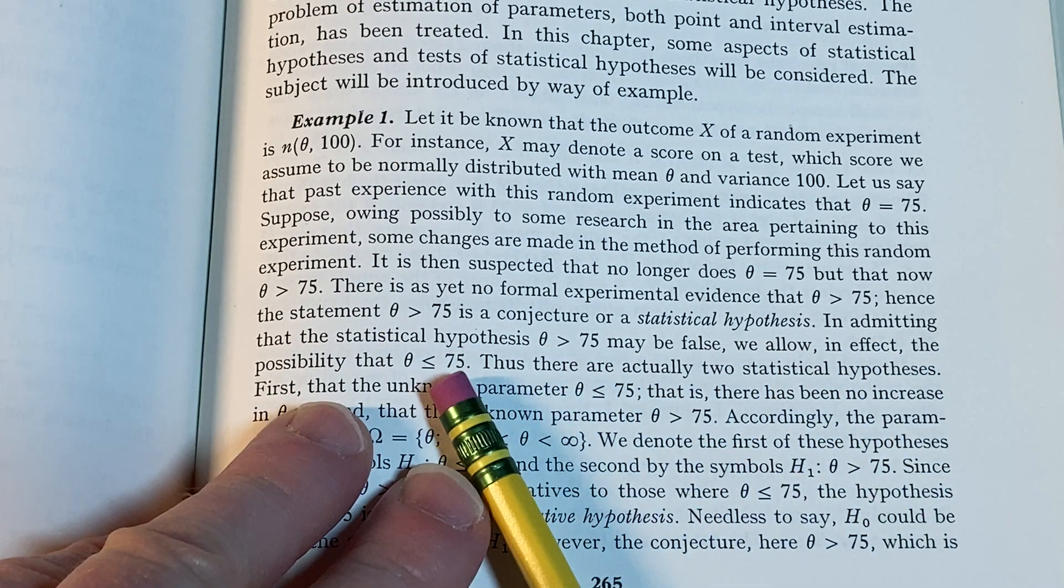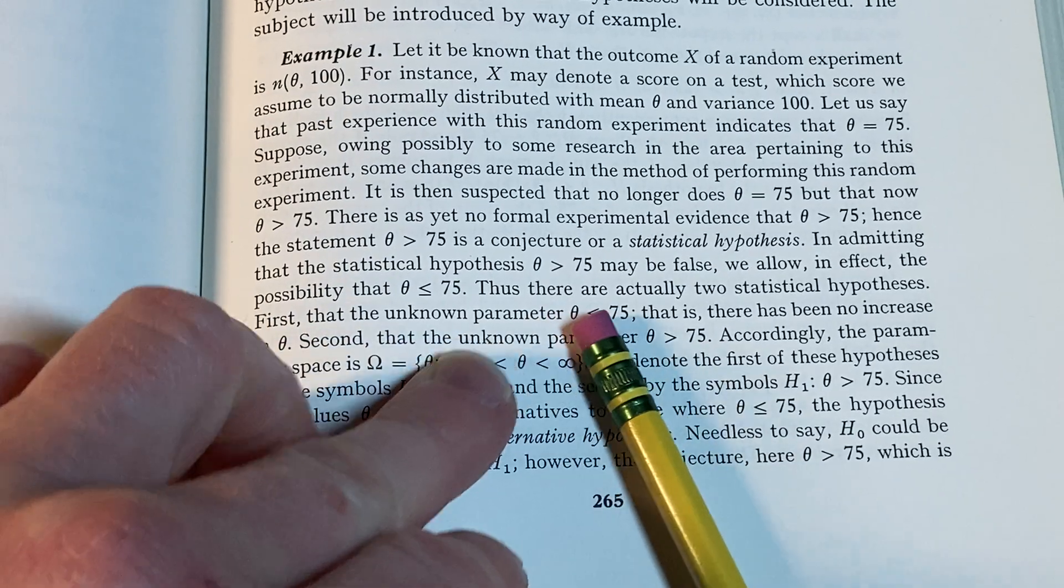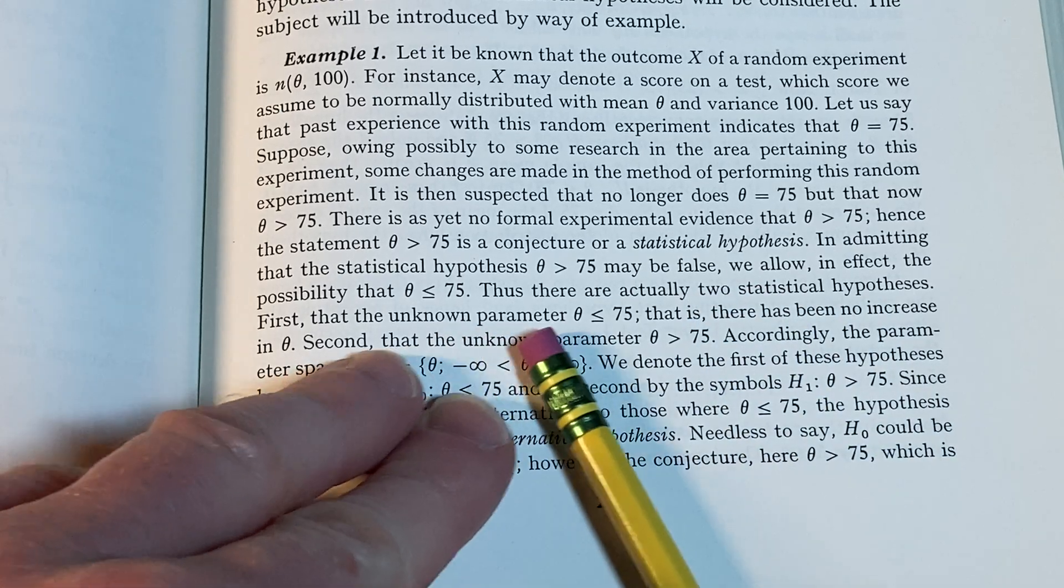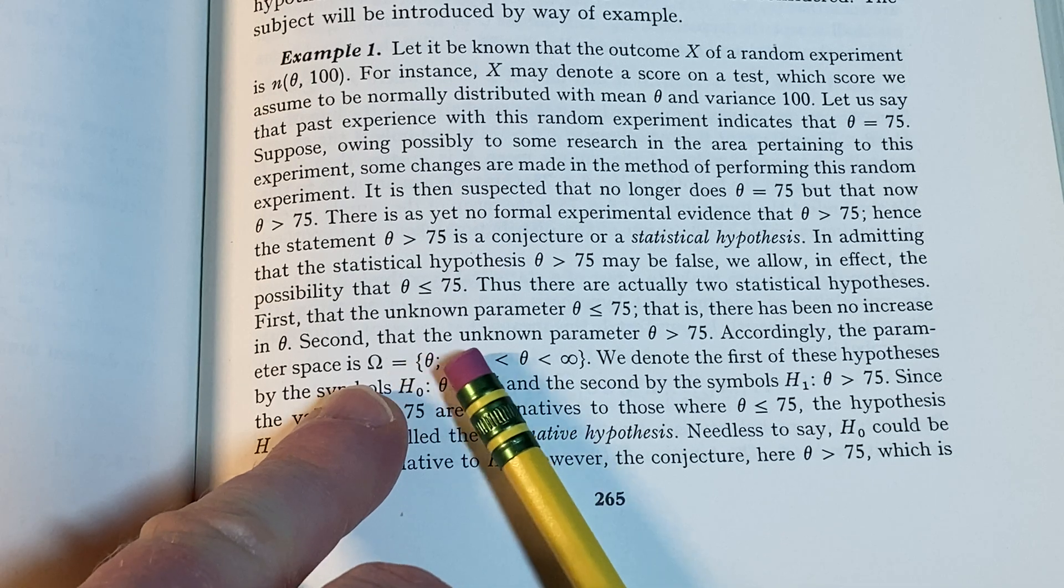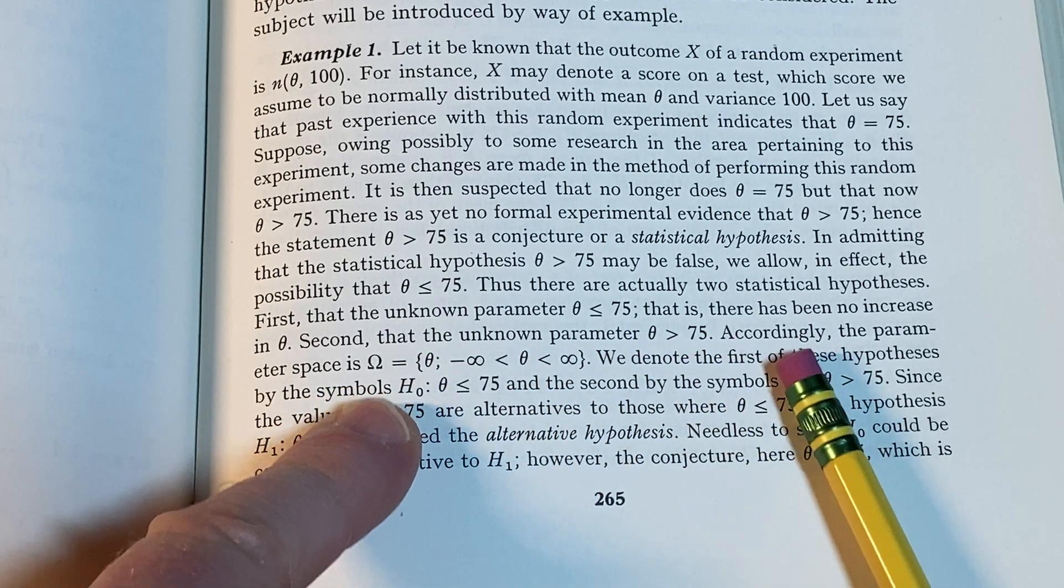In admitting that the statistical hypothesis θ > 75 may be false, we allow in effect the possibility that θ is less than or equal to 75. Thus, there are actually two statistical hypotheses. First, the unknown parameter θ is less than or equal to 75, that is, there has been no increase in θ. Second, that the unknown parameter θ is greater than 75.